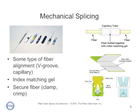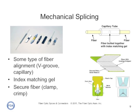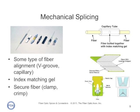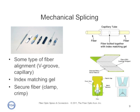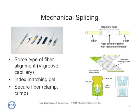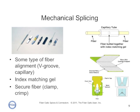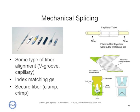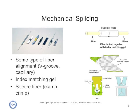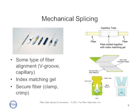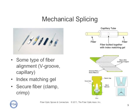Mechanical splices use some type of fiber alignment, typically a V-groove or a capillary, and index matching gel to reduce the reflectance. The fibers are secured by crimping, either with a clamp or a crimp, to hold them in place. Fusion splicing gives lower splice loss because of the fusion of the two fibers in the electric arc. Mechanical splices tend to cost more per splice, because the splices themselves are complex mechanical devices.